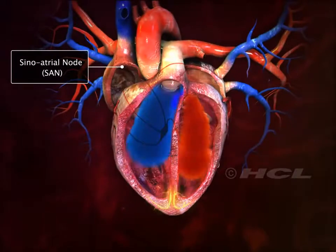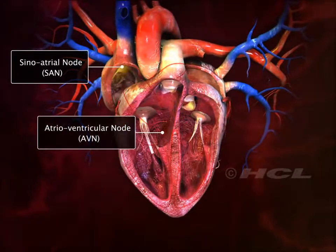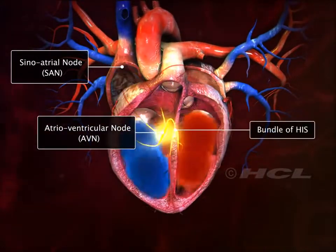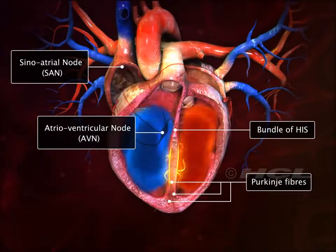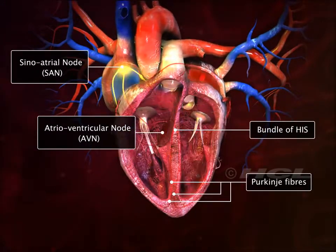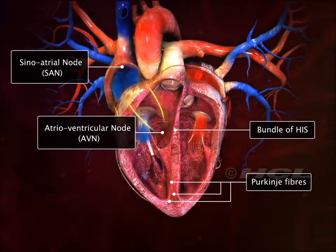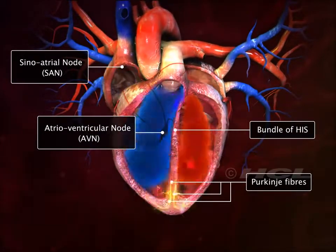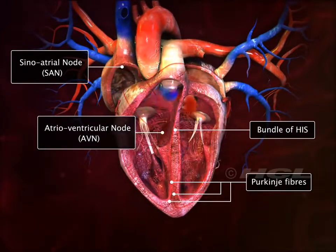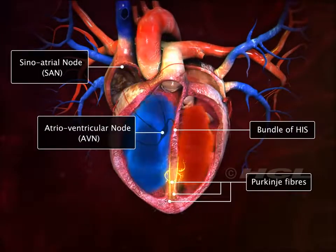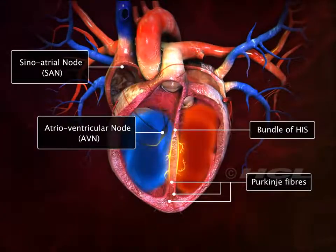The sinoatrial node, atrioventricular node, bundle of His, and Purkinje fibers represent the specialized cardiac tissue. These fibers are auto-excitable, as they have the potential to generate electrical activity without any external stimuli. This makes the heart beat continuously.